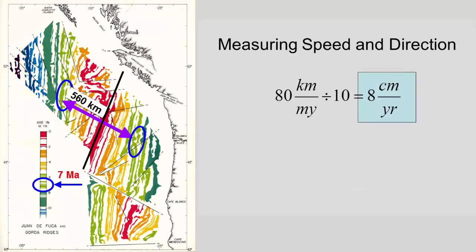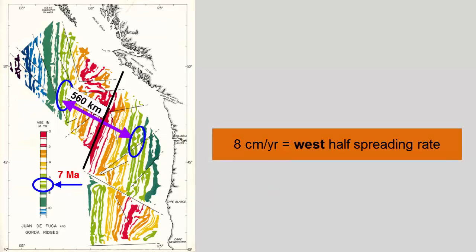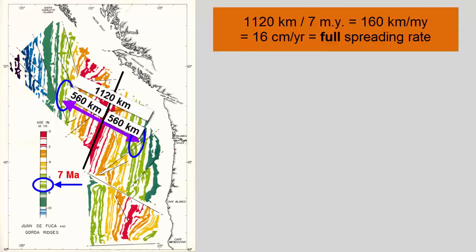We call that a half-spreading rate, by the way, because it represents how fast one half of the rift is spreading, or how fast the western side is moving away from the center. If we want to know the full spreading rate and how fast both sides are moving away from each other, the distance has doubled, and we get 16 centimeters per year.